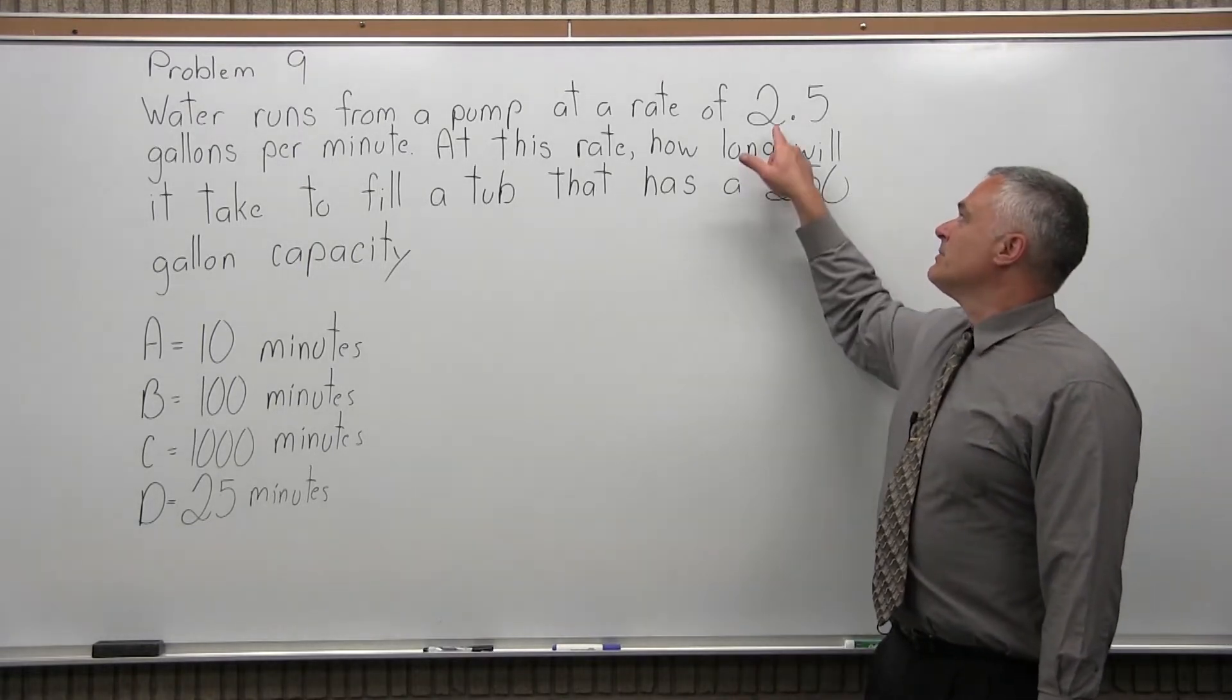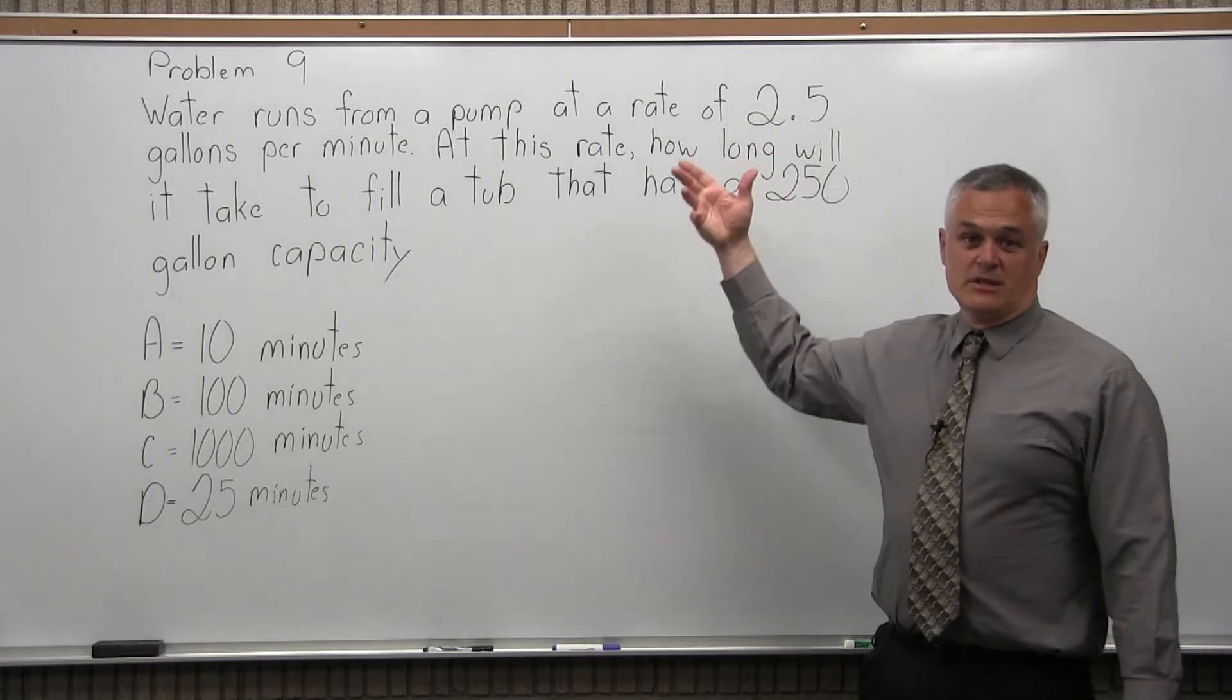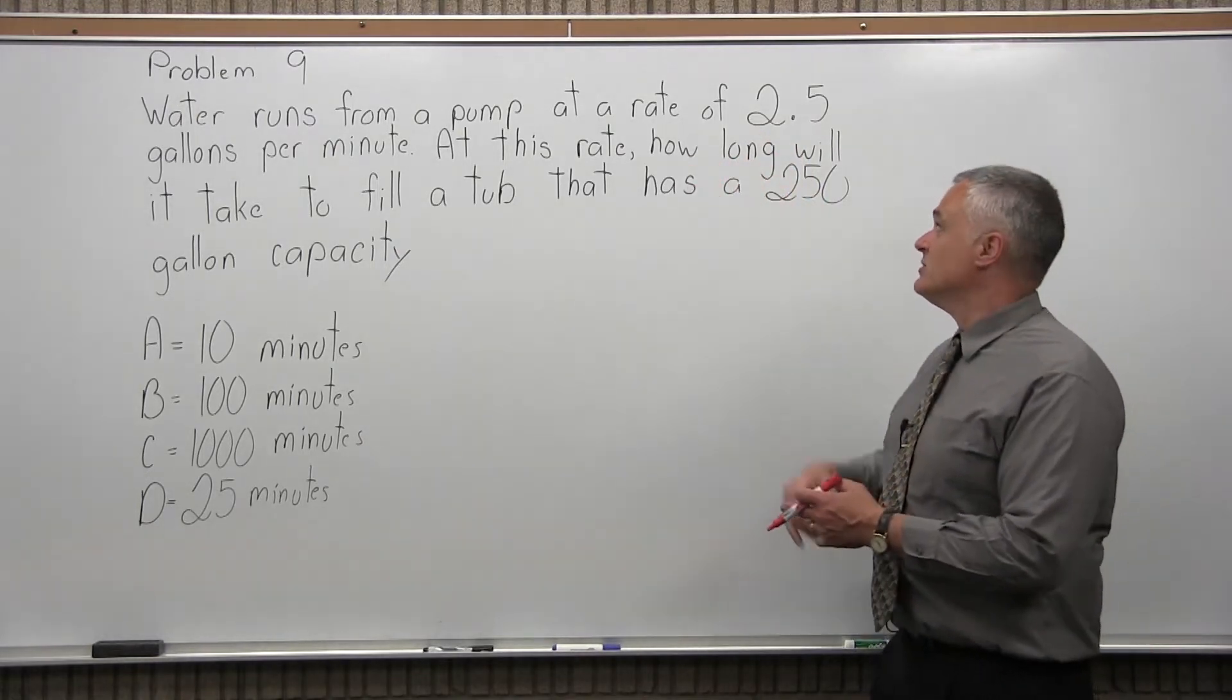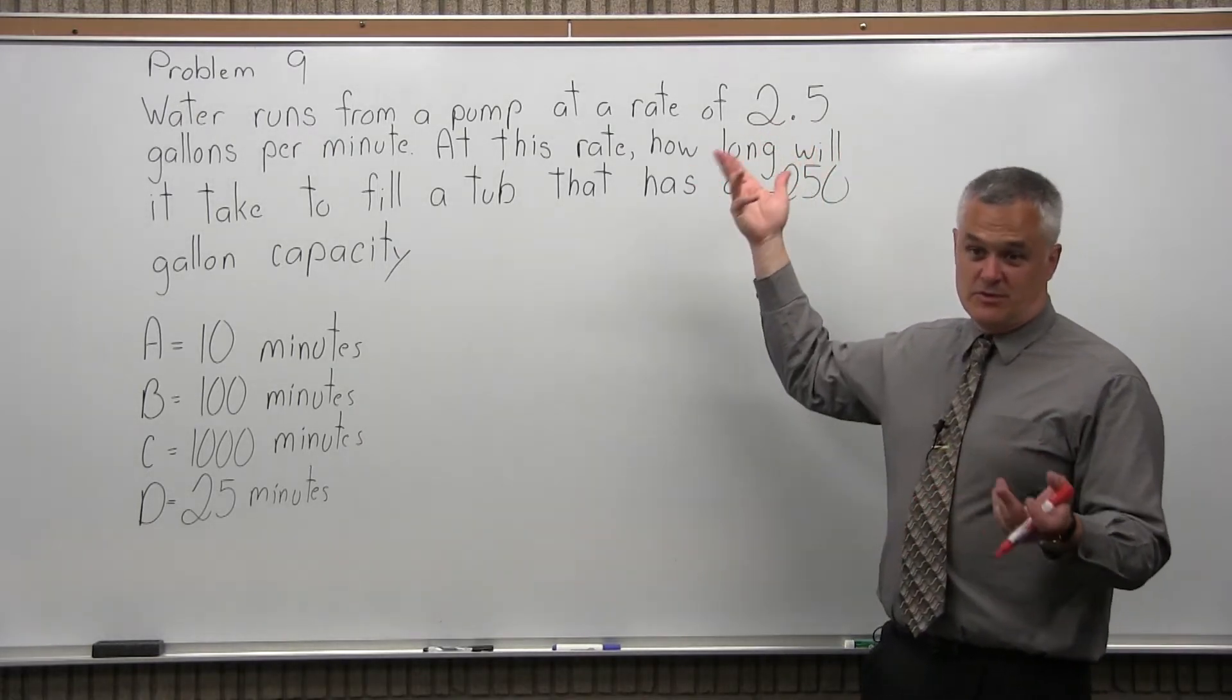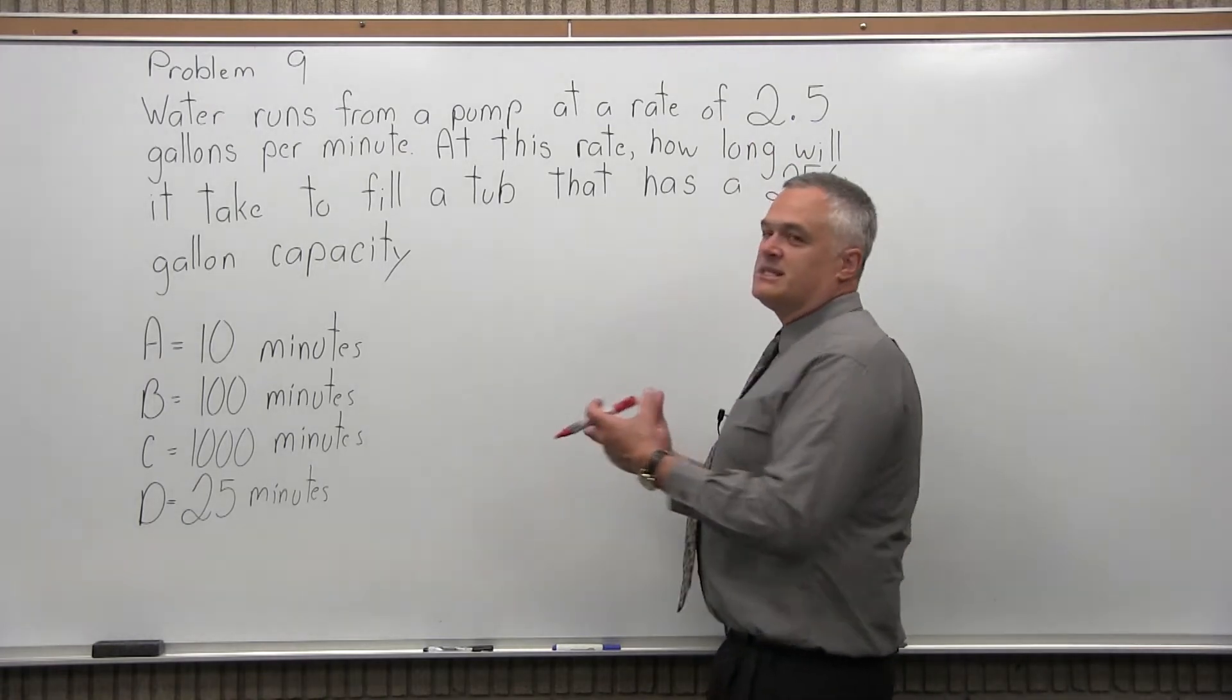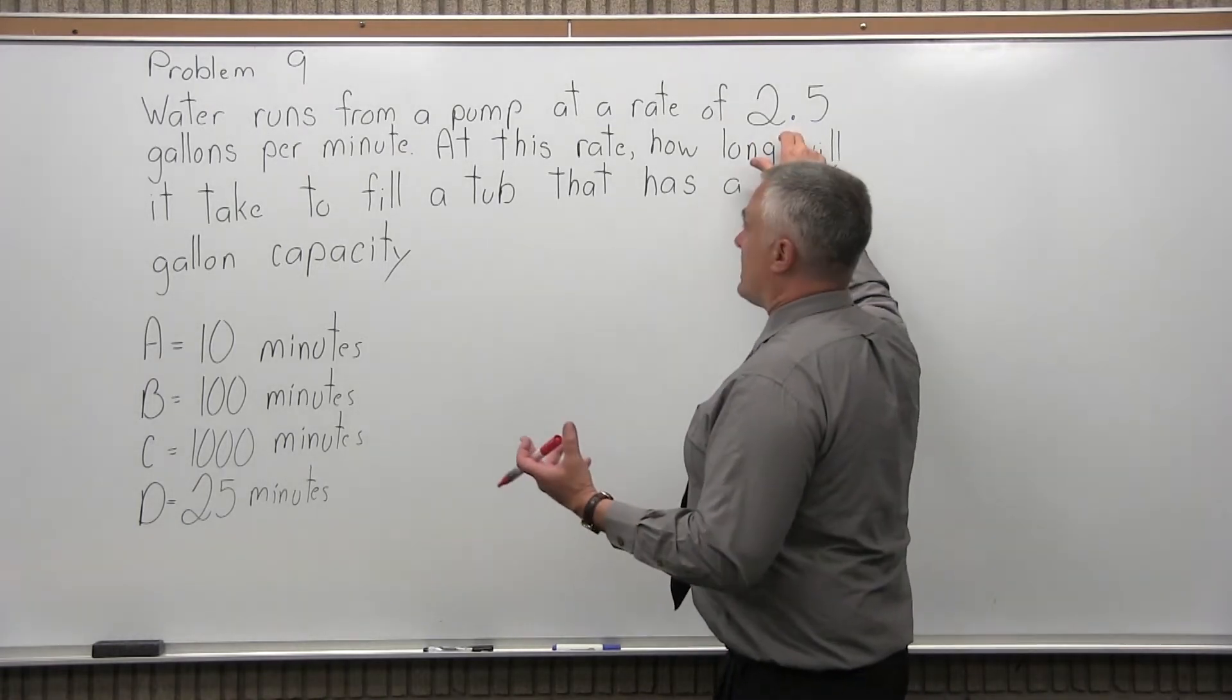So the pump is pumping two and a half gallons every minute. So one minute you get two and a half gallons. In two minutes, five gallons. Three minutes, seven and a half gallons. So basically it's the number of minutes times that rate that it pumps.